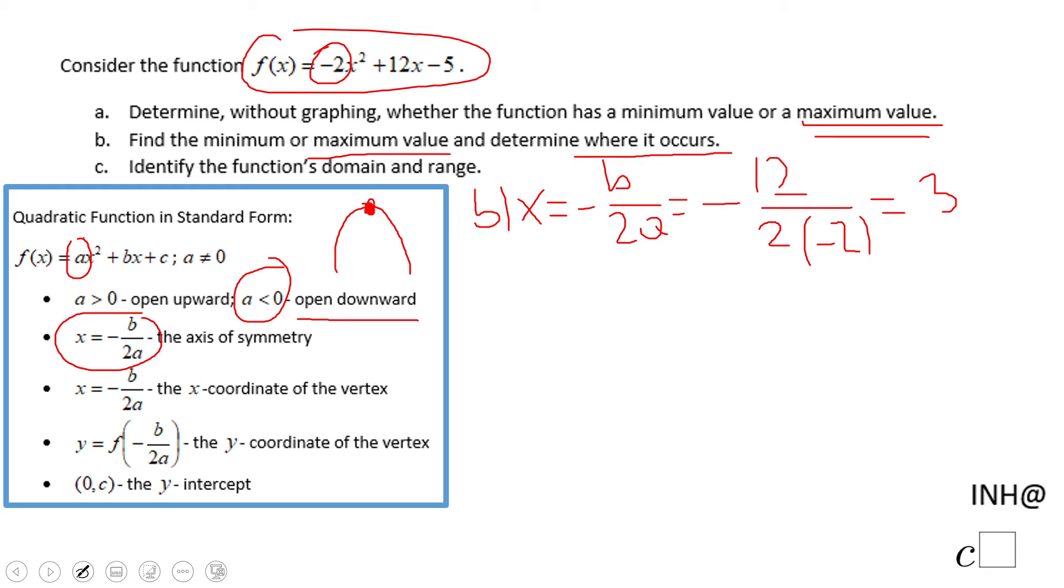How do we find that maximum? We're going to take y equals f of 3, and we have negative 2 times 3 squared plus 12 times 3 minus 5. Let's simplify this expression. 3 squared is 9 times negative 2, that will be negative 18. This we have 12 times 3, that is 36, and minus 5. So negative 18 plus 36 is positive 18, minus 5, positive 13.